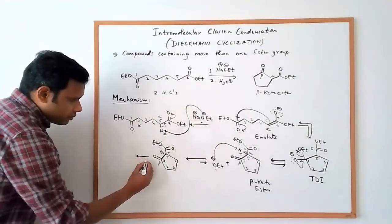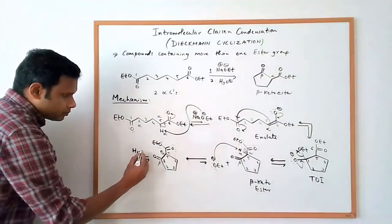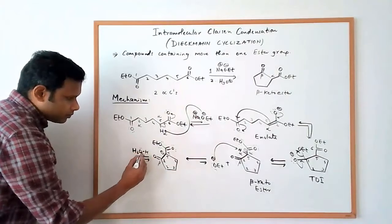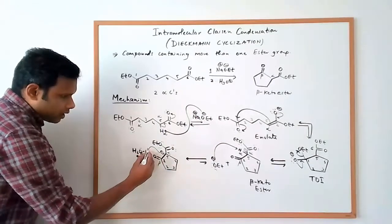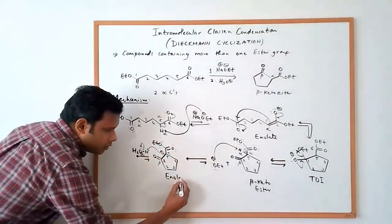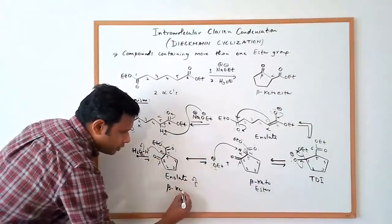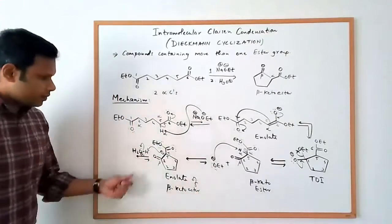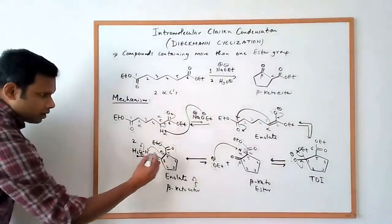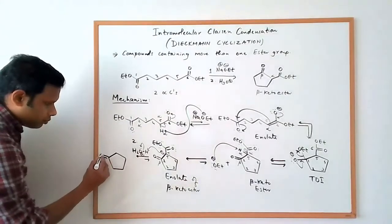And so then finally, when we do the acidification, we can use acid to protonate it. So the alpha carbon or the enolate gets protonated. So this is basically the enolate of beta-ketoester. So when we add acid, which is the second step here, the alpha carbon gets protonated.